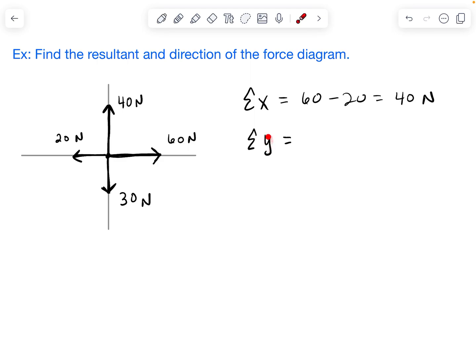And then for my total y, I have 40 going north or upwards. Upwards is generally a positive direction, and I've got 30 going down. Downwards is usually a negative direction. So I'm going to subtract the 30 from the 40. So 40 minus 30 is going to give me 10 Newtons.